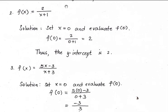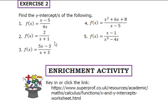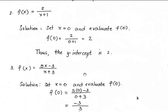Number 2: f(x) equals 2 over (x plus 1). Solving for f(0), we have f(0) equals 2 over (0 plus 1), which equals 2. Hence, the y-intercept is 2. This means the graph of the function will touch the y-axis at y equals 2, or at the point (0, 2).